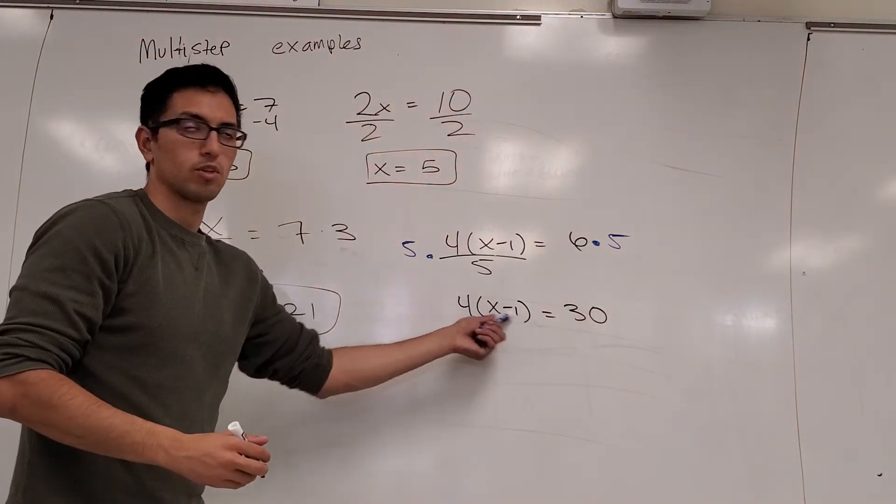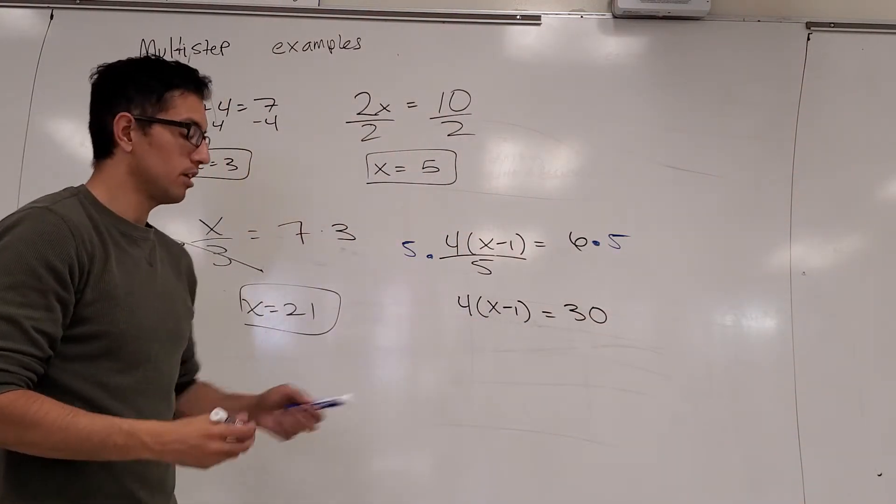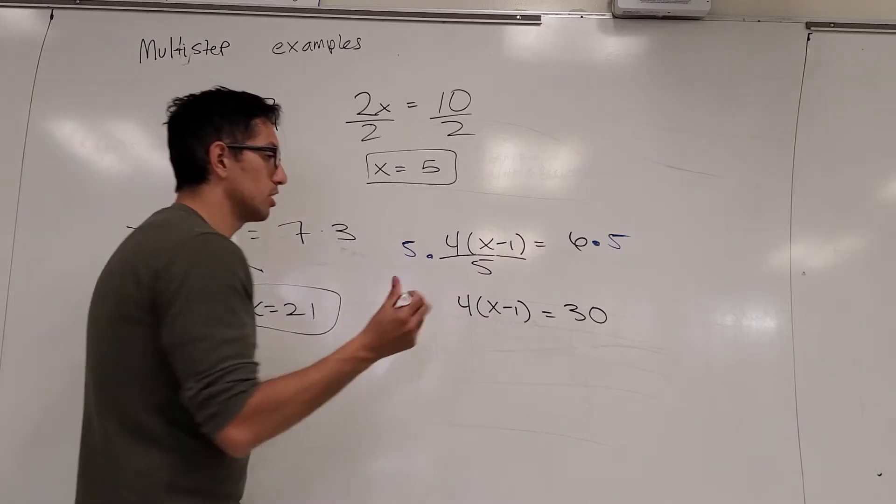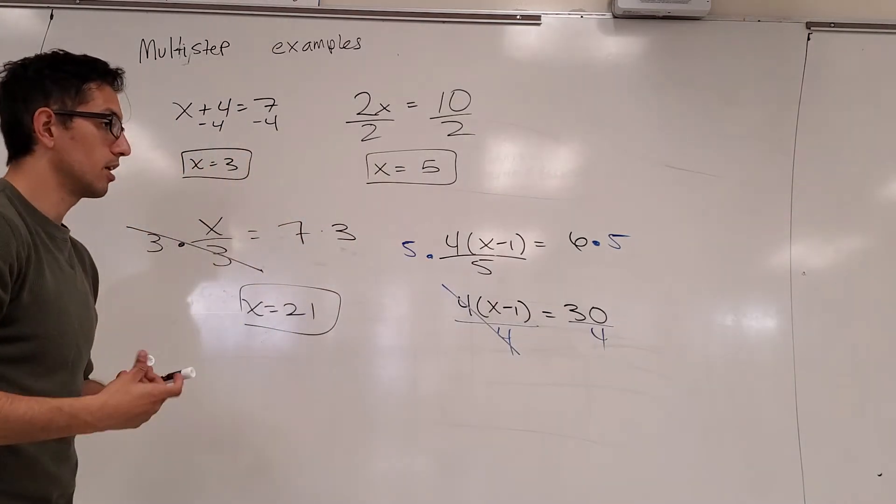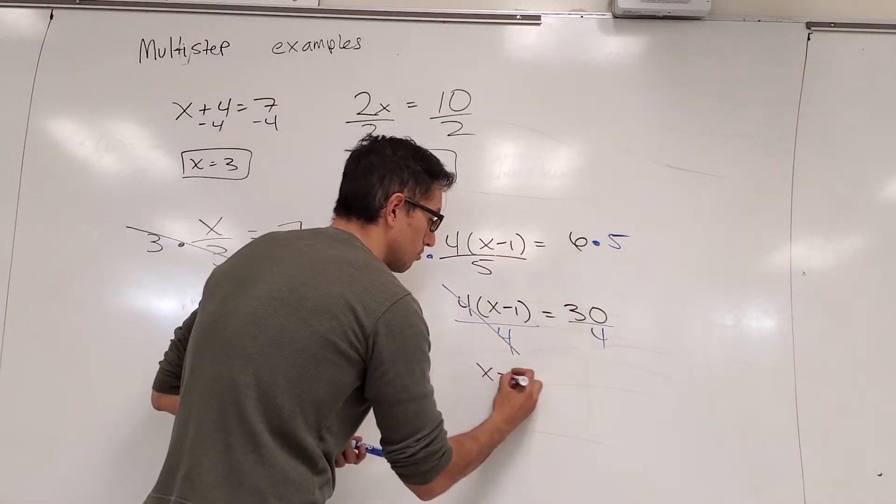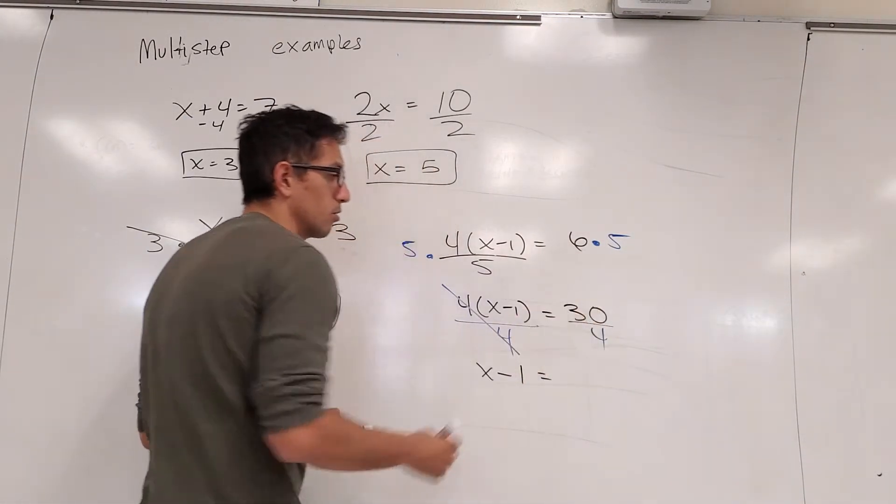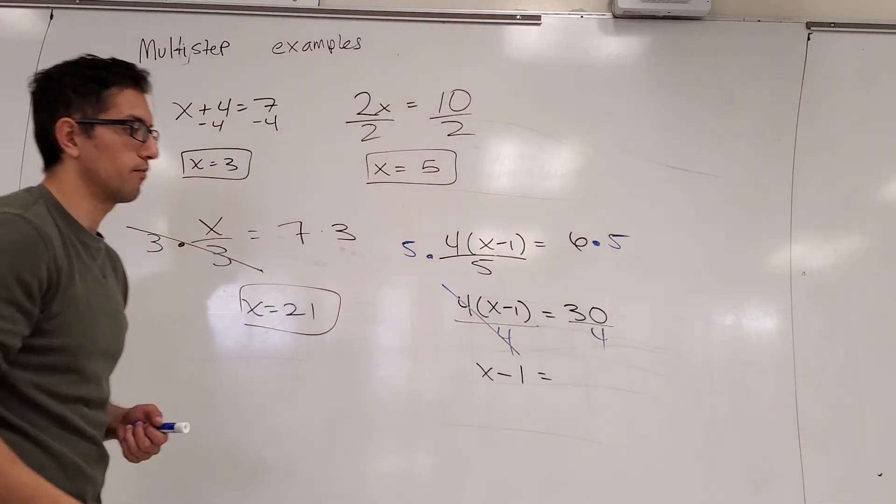Then, in front of this parentheses where the x is at, there's a times 4. If you want to divide both sides by 4, you cancel that out. And we get x minus 1 equals, you plug that into your calculator, and you would get 7.5.